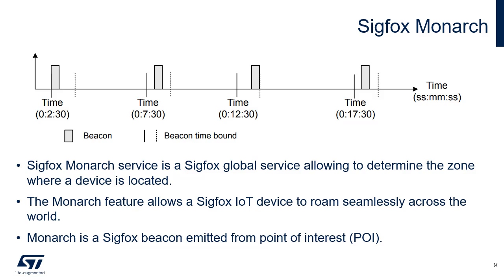Monarch is a Sigfox beacon emitted from a point of interest, or POI. The Monarch beacon is emitted at a frequency allowed by the region the POI belongs to. The beacon contains region configuration (RC) information that a Monarch-capable device can demodulate. Upon reception, the Monarch-capable device is able to switch automatically to the right region configuration and send information to the network. The Monarch feature allows a Sigfox IoT device to roam seamlessly around the world. The Monarch signal is sent at the POI every 5 minutes, plus a random back-off period of 10 seconds. The frequency of the beacon is region-specific, and the beacon lasts a total of 400 ms. If a device clock is set, it is possible to open a scan window only when the Monarch signal is present, to reduce current consumption of the end device.